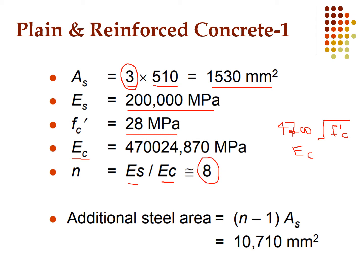The additional steel area is (n − 1) × As. Plugging in the values of n and As gives us 10,710 mm².